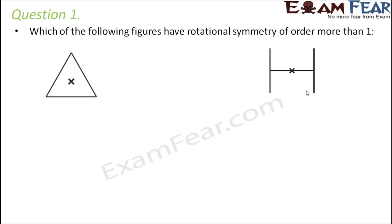Why are we asking about order more than one? Because all objects have rotational symmetry of order one. So the uniqueness is when an object has rotational symmetry of order more than one. So let us look at this triangle, and decide by what angle we should rotate it to see if rotational symmetry exists.